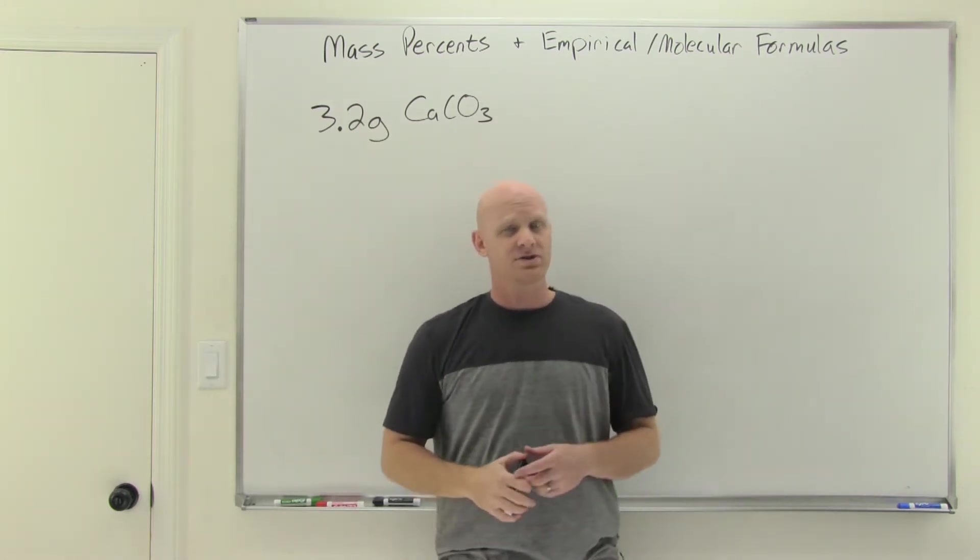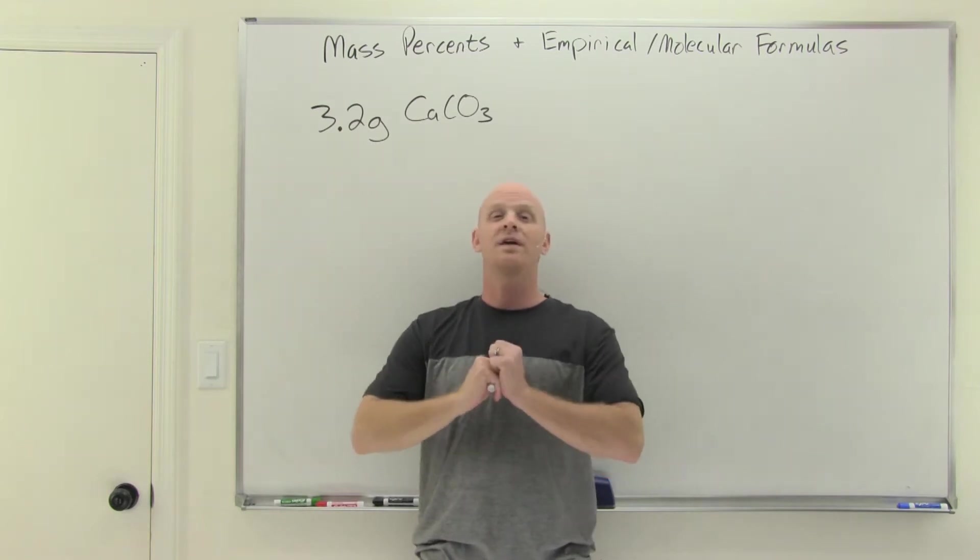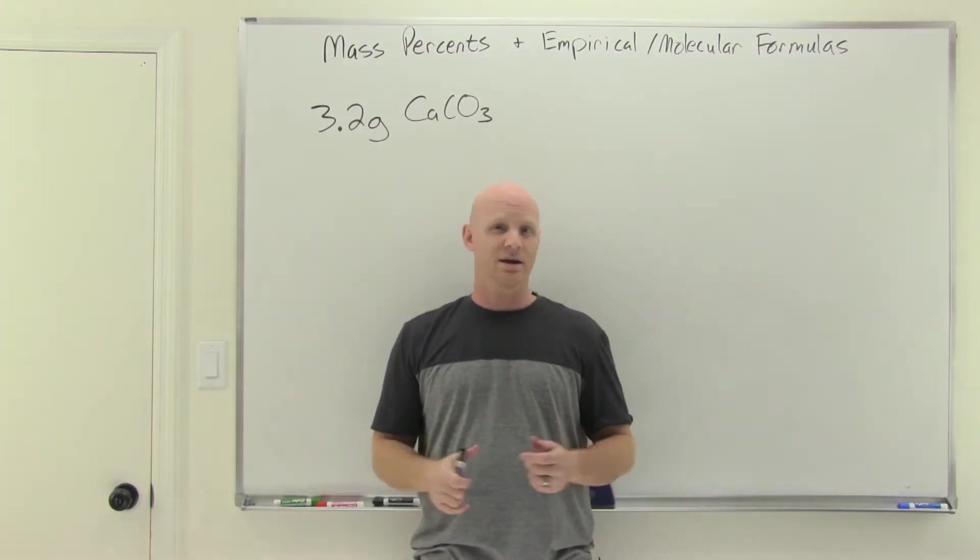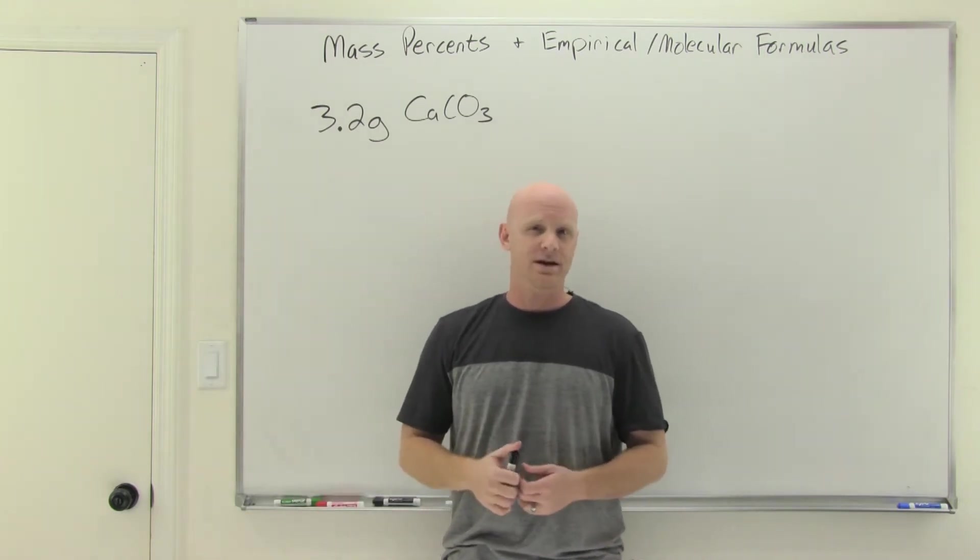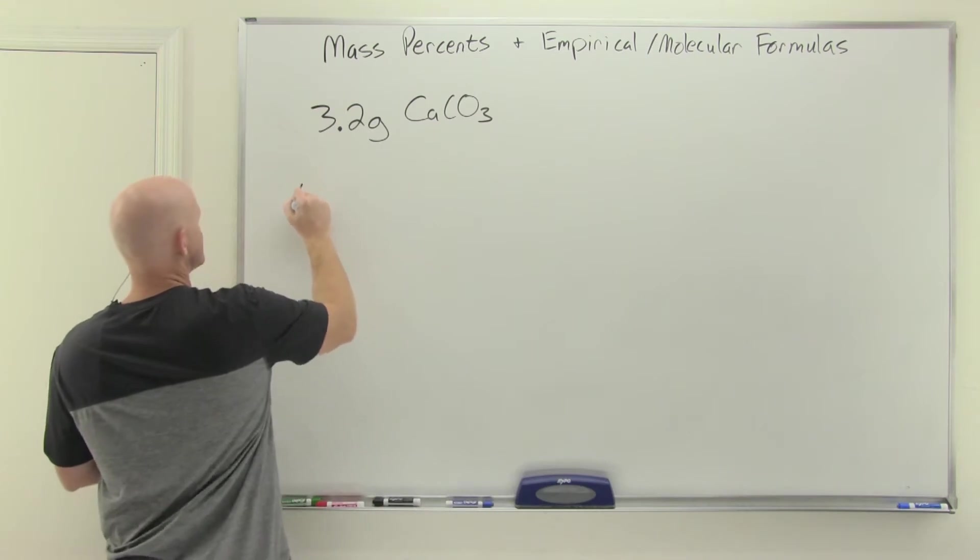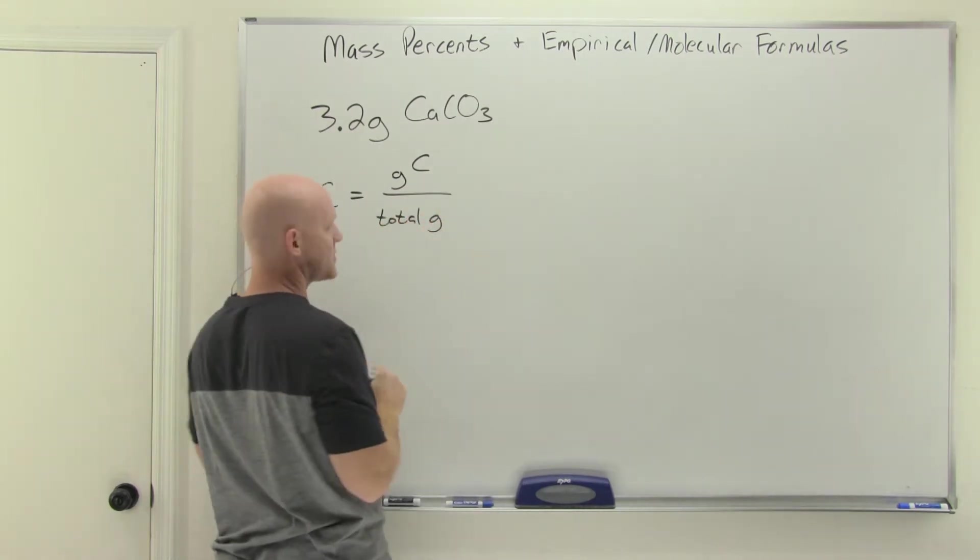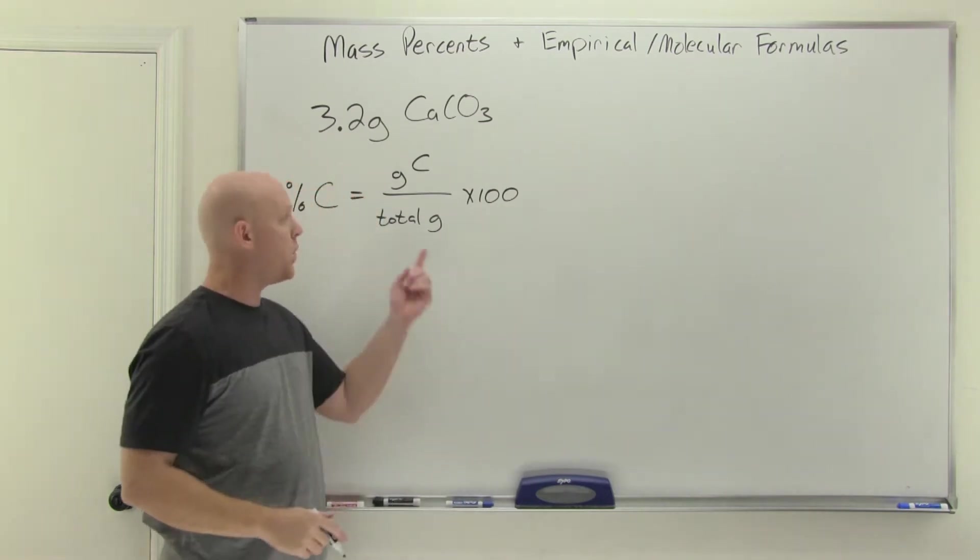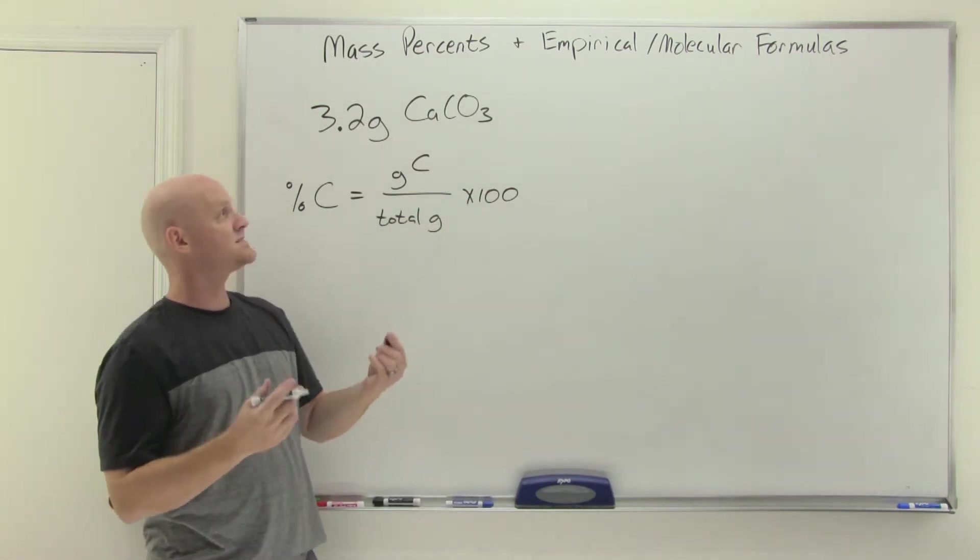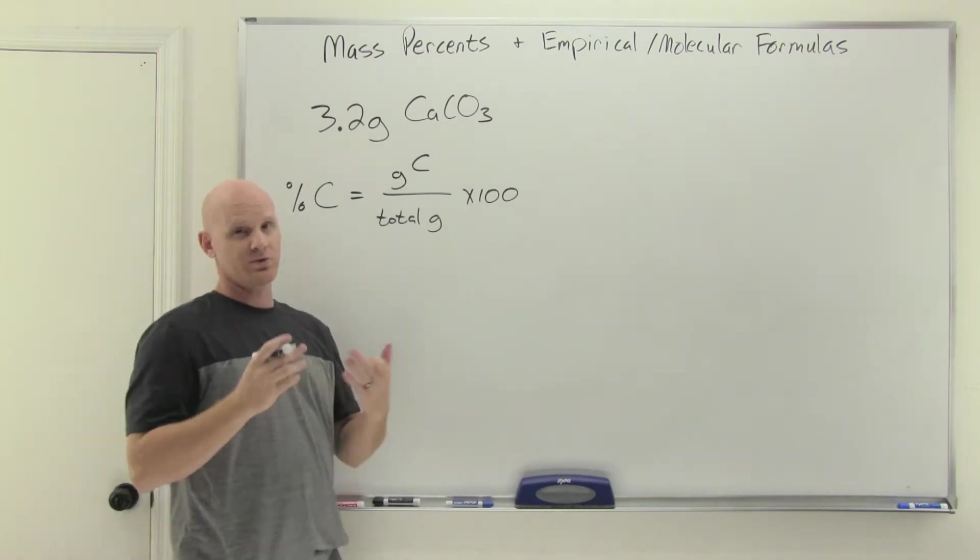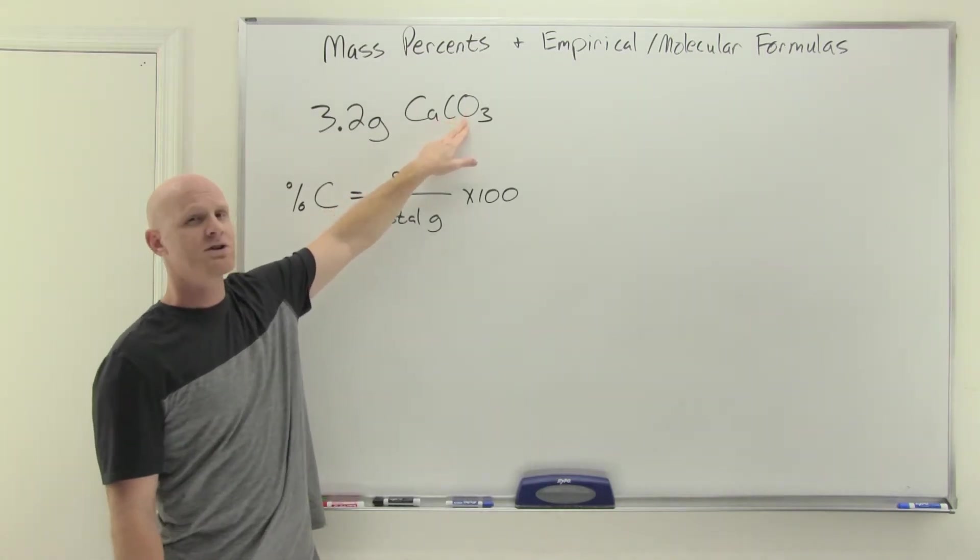It turns out these mass percents are what we call an intensive property, and in one of the early chapters we learned that an intensive property is one where the sample size does not matter. It'll be the same regardless of what size sample you use. So I've got a 3.2 gram sample size, it doesn't matter. I can use any sample size and it would work out exactly the same for these mass percents. The only question is what sample size do I want to actually use? If you have the formula, it turns out a really convenient sample size is the one mole sample. That's what a molar mass corresponds to.